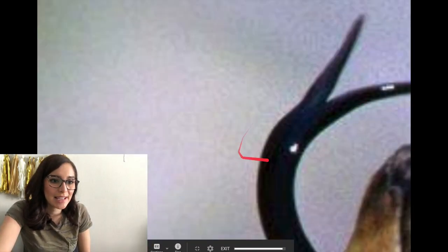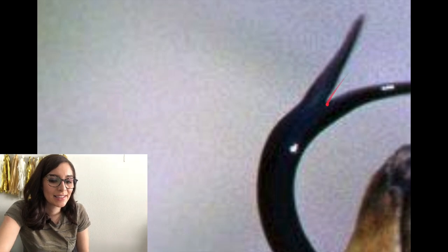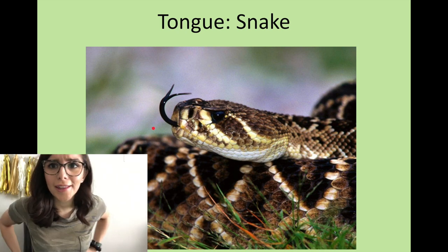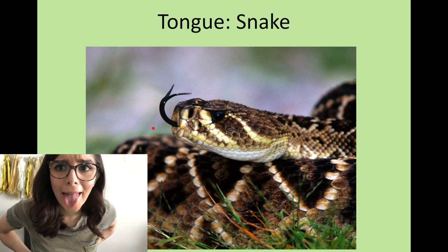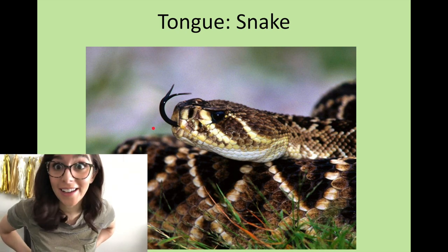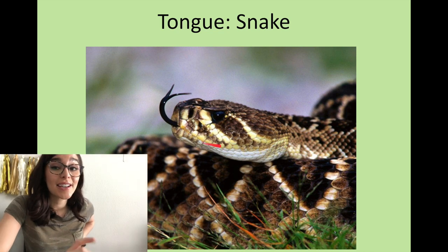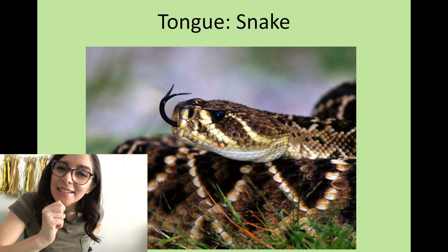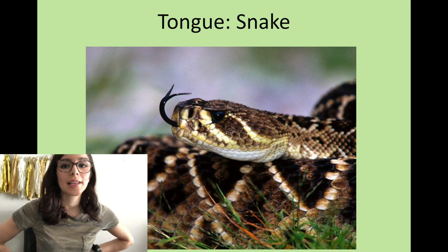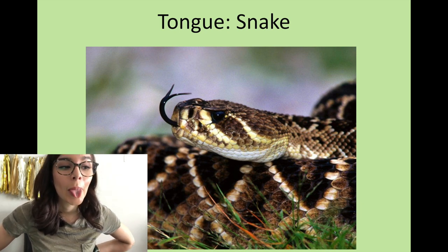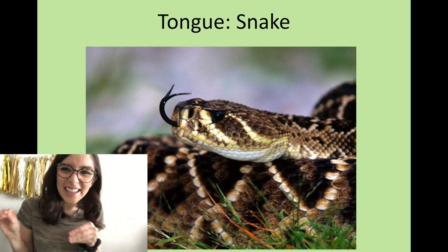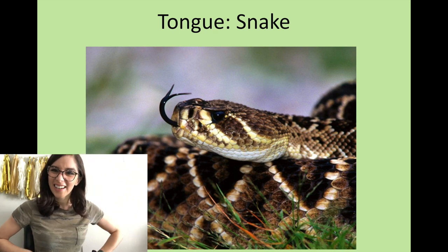I bet some of y'all know what this is. That was the tongue of a snake. Does your tongue look like that? Mine does not! They actually use their tongue to smell — isn't that crazy? A lot of times you'll see snakes flicking their tongue like that because they're actually smelling the air.